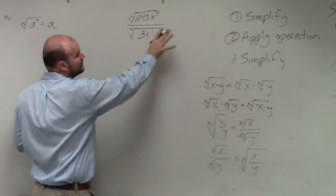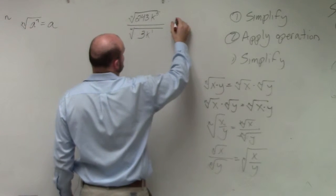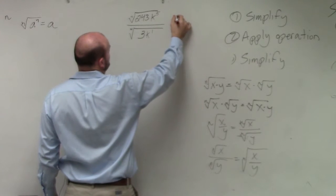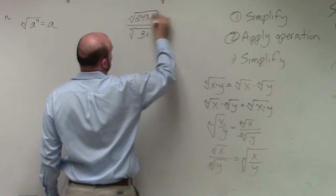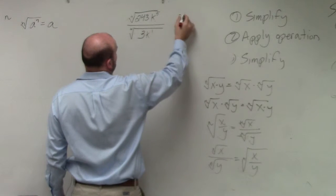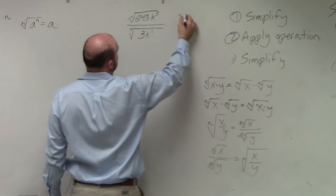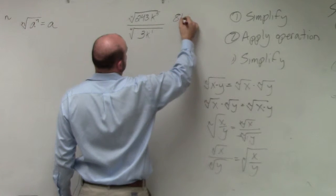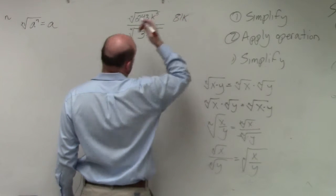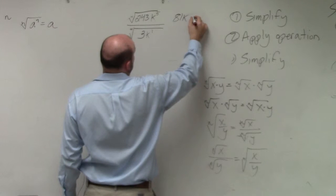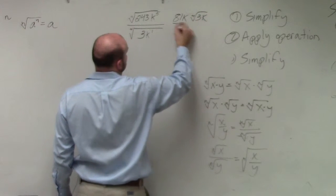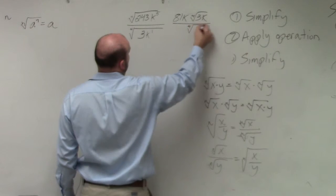Well, you could simplify it as, I'm going to show you guys a different way. Let me show you two different ways. You could simplify this as, that would be 81 times, what, 3? So that would be 81k times the fourth root of 3k over the fourth root of 3k. And then those would divide out.